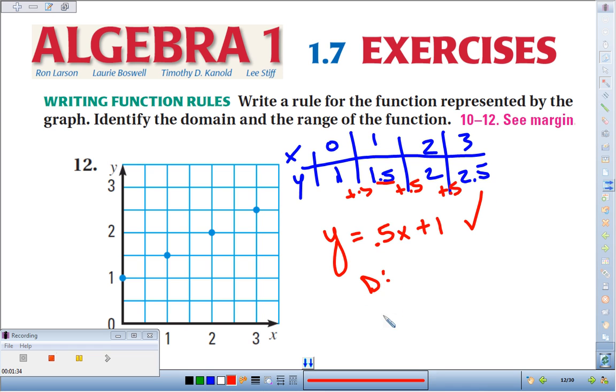We're also supposed to find the domain and range. Domain is the set of all inputs, or x values in this case. We'd have 0, 1, 2, and 3. We don't say 0 through 3, because we don't hit the decimals between 0 and 3. Our range, we'd say, very specific: 1, 1 and 1 half, 2, and 2 and 1 half.